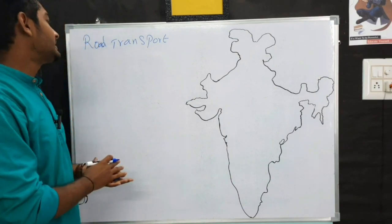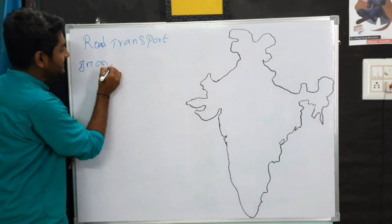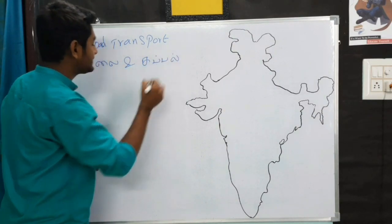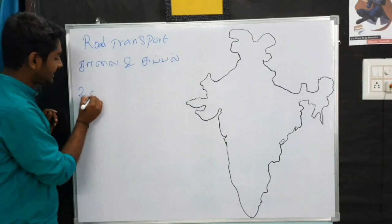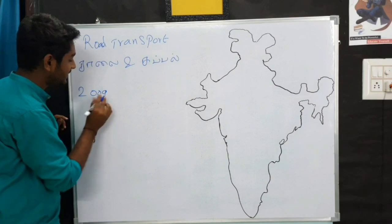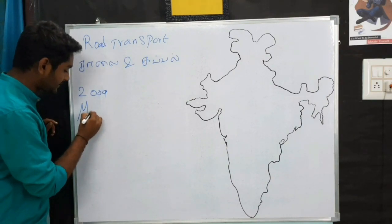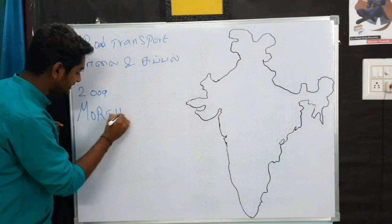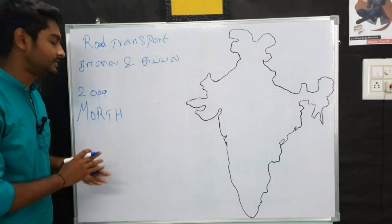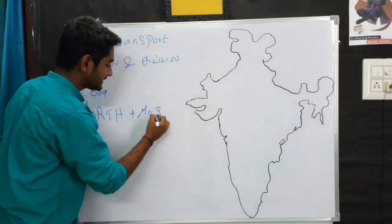Let's take a look at the 3rd page. The 2nd page is NOTH. The 3rd page is SATA. The Ministry of Road and Transport Highways. The 2nd page is the Ministry of Shipping.